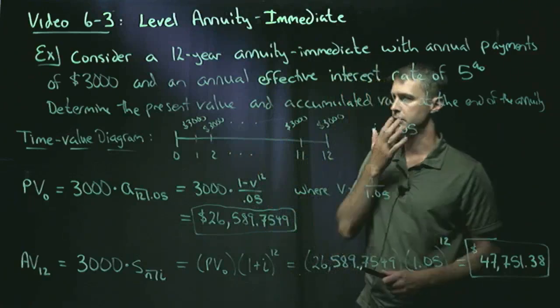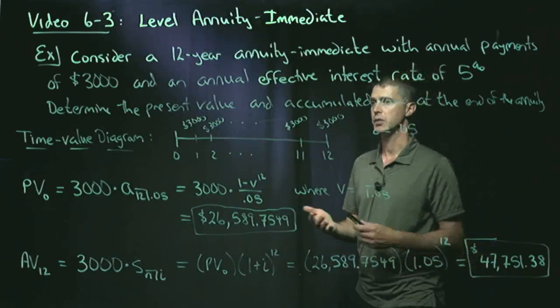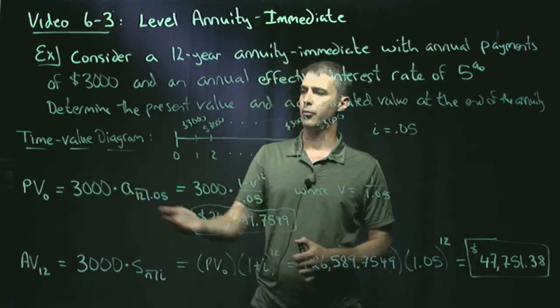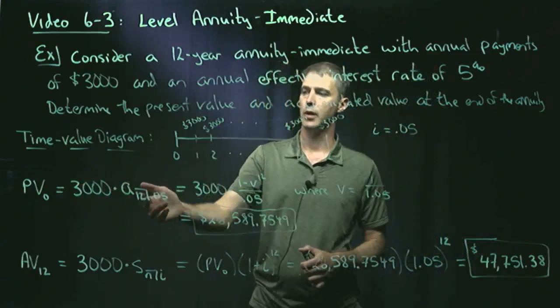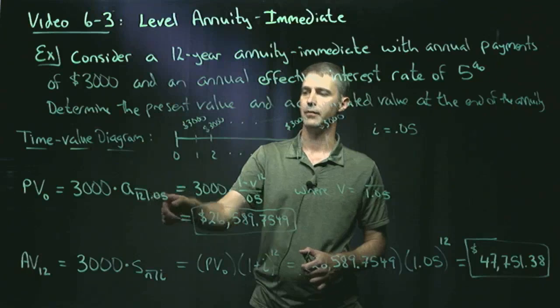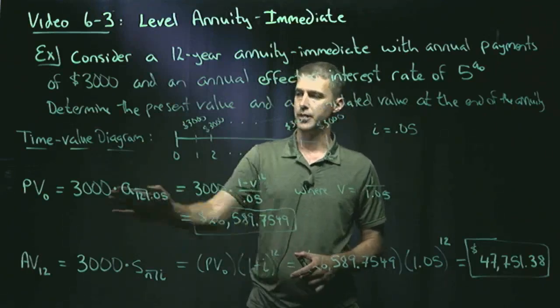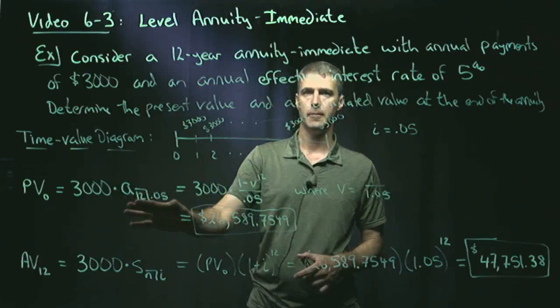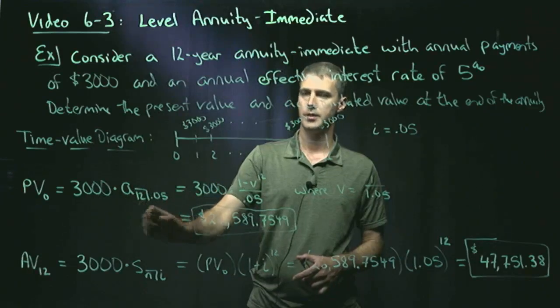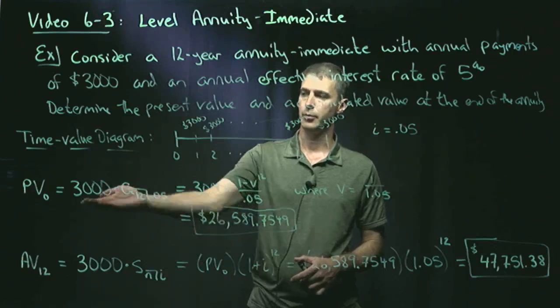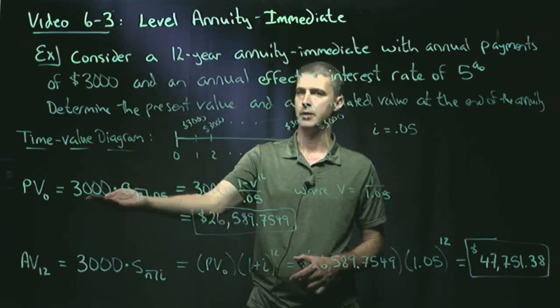Our period effective interest rate is 0.05. So the present value, we have the formula, 3,000 times A12 angle 0.05. I think I said bracket before. That's typically called angle. So this denotes that it's an annuity immediate, 12 payment periods, and a 5% period effective interest rate. 3,000 denotes the payment per period.